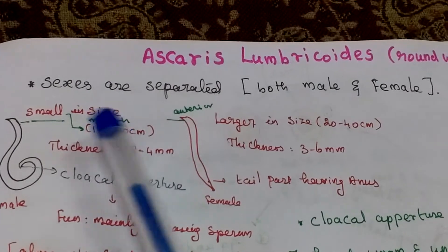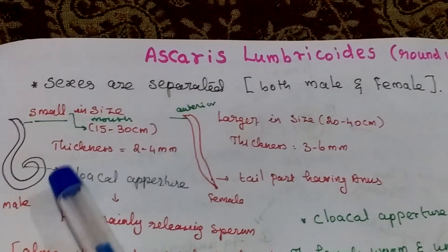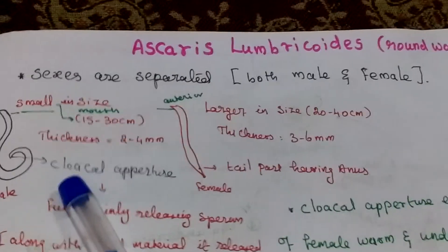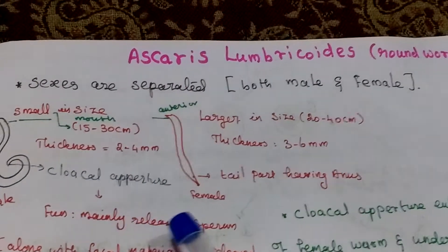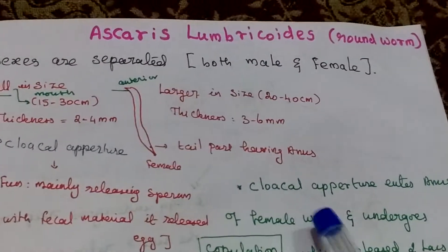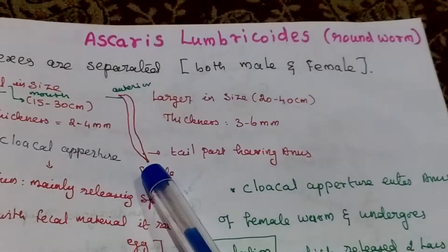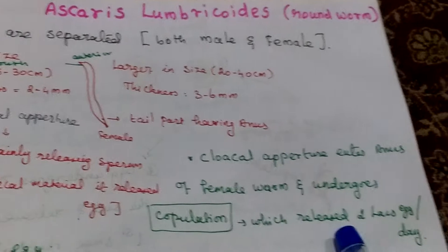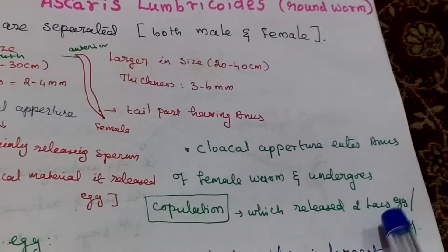Both have anterior part with mouth. Posterior part of male has cloacal aperture, female has anus. Cloacal aperture releases sperm, enters the anus of female and undergoes mating or copulation. It will release 2 lakh eggs per day.